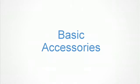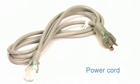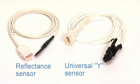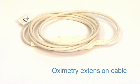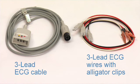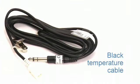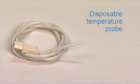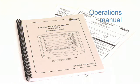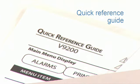The basic accessories included with all models are: an AC power cord that charges the internal battery, reflectance and universal Y-pulse oximetry sensors, an oximetry extension cable, a 3-lead ECG cable and 3-lead ECG wires with alligator clips, an NIBP cuff set, a black temperature cable, a disposable temperature probe, an operations manual, and a quick reference guide.